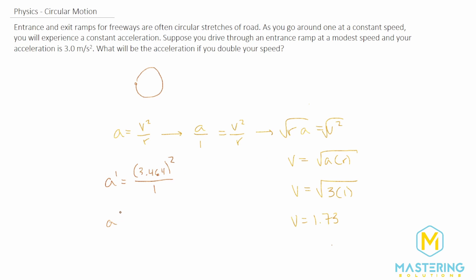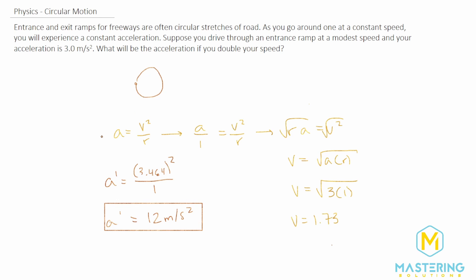Our acceleration quadrupled by doubling our speed. Conceptually we already knew that, but we showed mathematically that it's true: because of the squared relationship in the formula, doubling the speed will quadruple the acceleration.